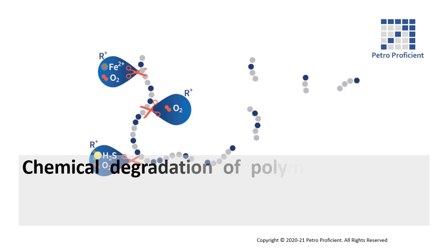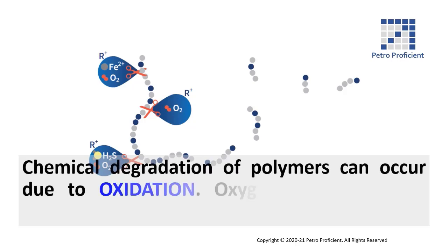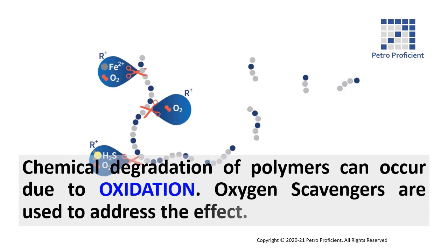Chemical degradation of polymers can occur due to oxidation. Oxygen scavengers are used to address this effect.